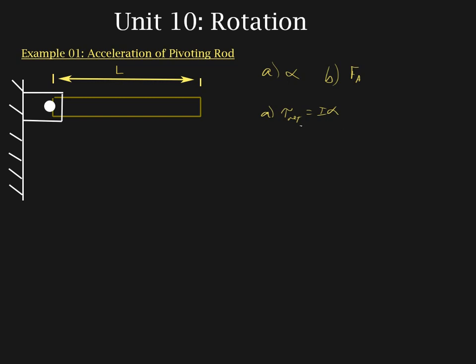Now, tau net is based off of all of the forces which are acting on the rod in conjunction with the axis of rotation. We already have an axis of rotation identified for us. So we'll use this point as our axis of rotation. It is the most logical point. So that's what we're going to use.